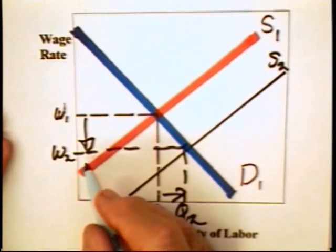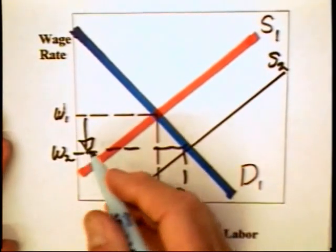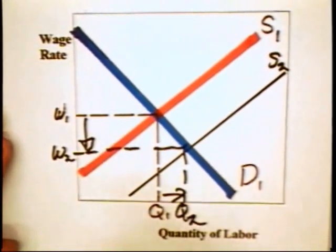Does it follow that the workers who have the lower wage are necessarily worse off than the workers who have the higher wage?